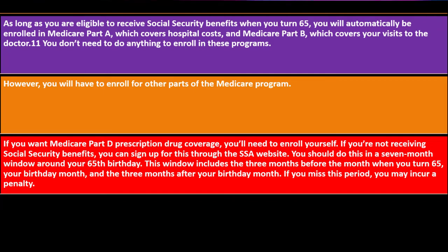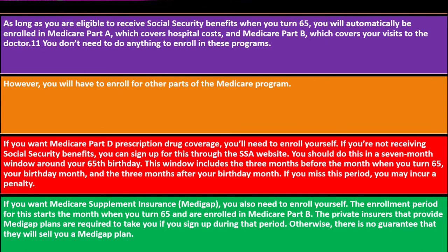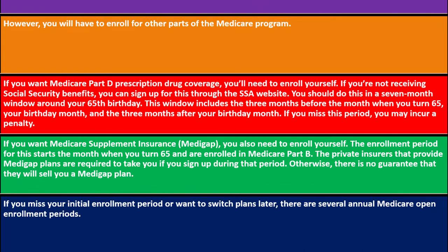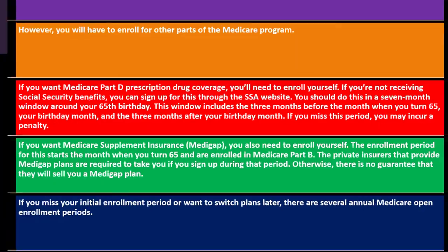You should enroll in a seven-month window around your 65th birthday — three months before the month you turn 65, your birthday month, and three months after. If you miss this period, you may incur a penalty. If you want Medicare supplement insurance — Medigap — you also need to enroll yourself. The enrollment period starts the month you turn 65 and are enrolled in Part B; private insurers are required to take you during that period. If you miss your initial enrollment period or want to switch plans, there are several annual Medicare open enrollment periods.